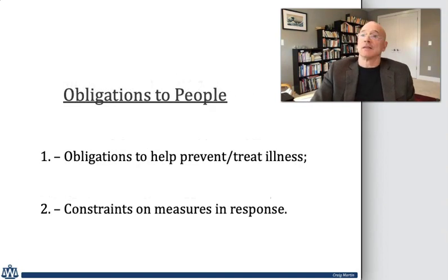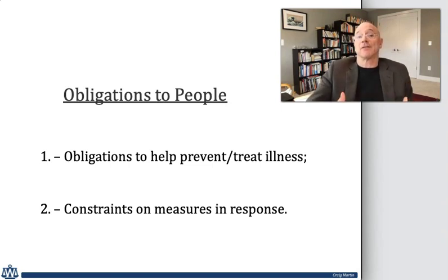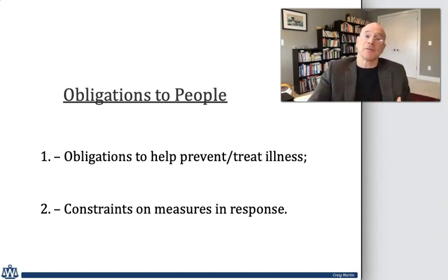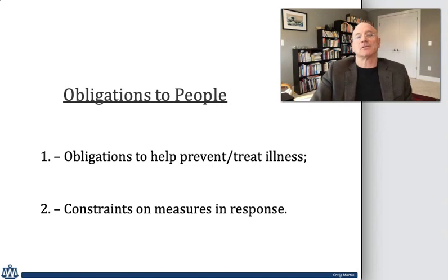Secondly, I'll look at the obligations of states to people within their territory. This includes both affirmative obligations to people within the country to protect them from the disease or from the pandemic, as well as constraints on states not to violate the rights of people within the country in their efforts to respond to the epidemic.